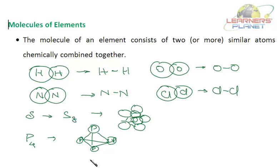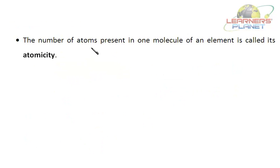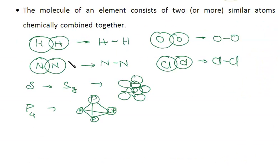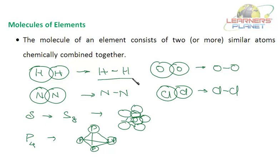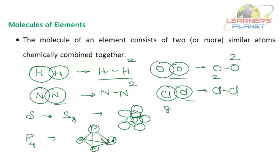A molecule of an element consists of similar atoms chemically combined together. The number of atoms present in one molecule of an element is called its atomicity. For example: hydrogen, oxygen, nitrogen, and chlorine each have atomicity 2; sulfur has atomicity 8 because there are eight atoms in one sulfur molecule; and phosphorus has atomicity 4.